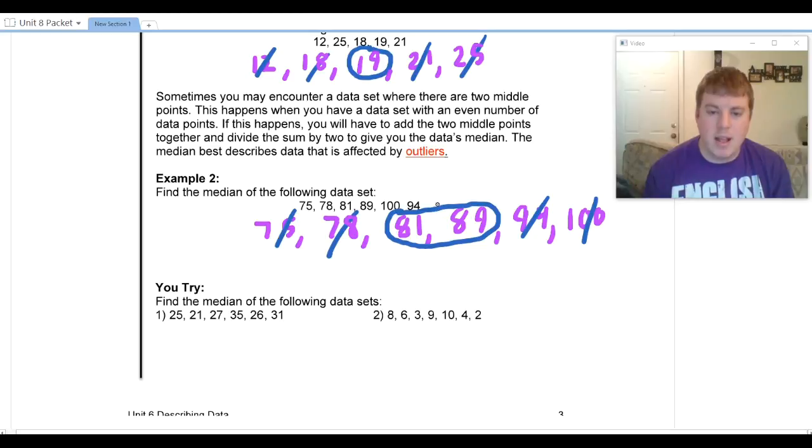So what I'm going to do is I have to find the number that is halfway in between those. So the way I'm going to do that is I'm going to take 81 plus 89 and I'm going to divide by 2. That's going to tell me the average of those, the middle number.